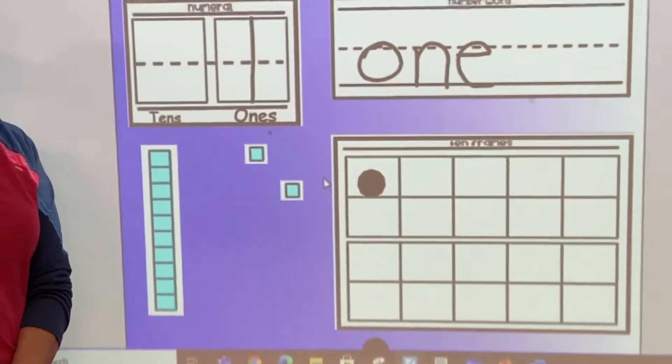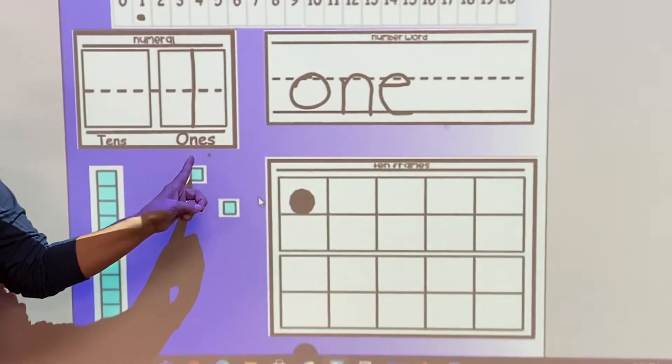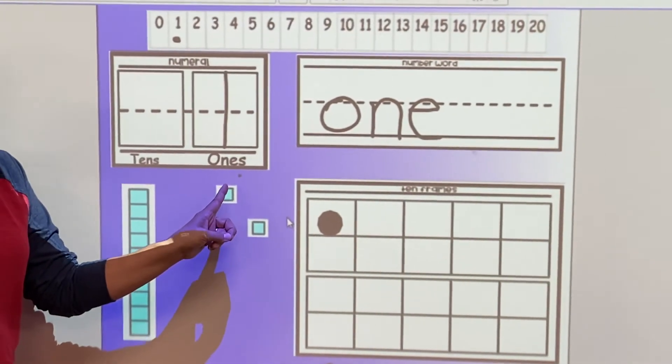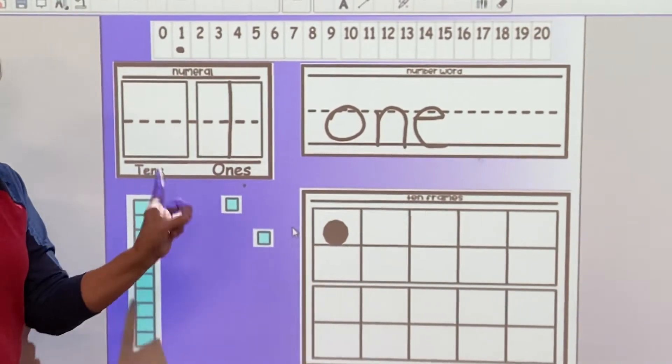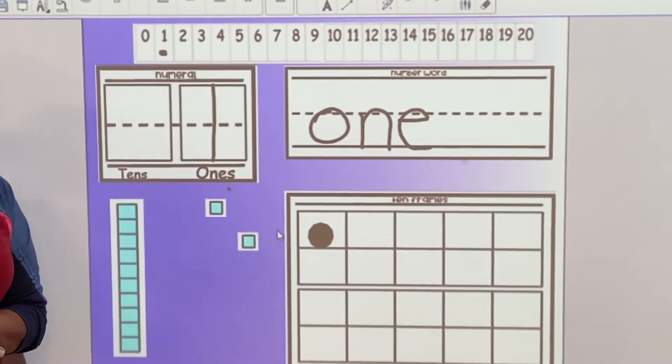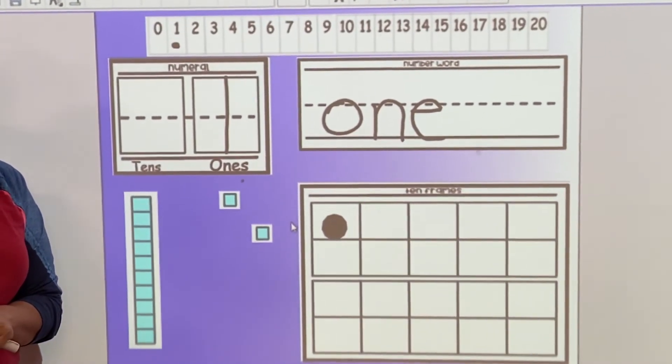So friends, again, let's review. What is our number this week? That's right. It's the number one. Can you show me one on your hand? One. Good job, friends.